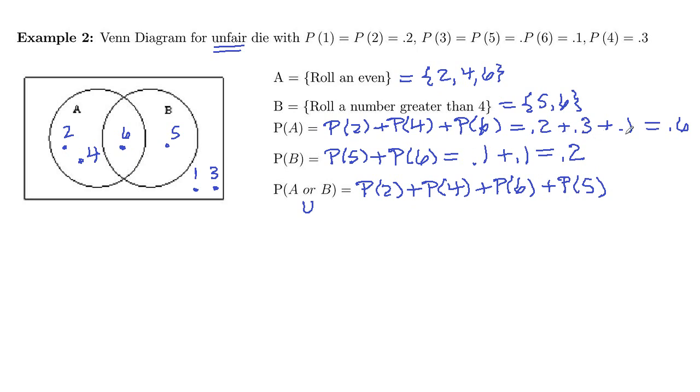So two, four, six, point two, point three, point one. And then probability of five, also point one. So that's 0.7, 70% chance that we would have an even number or a number that is greater than four, or both.